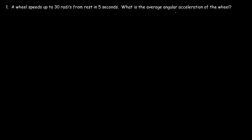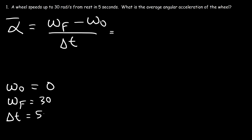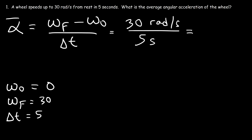What equation do we need to calculate the average angular acceleration? The average angular acceleration is equal to the change in angular velocity divided by the change in time. The initial angular speed is 0 because it speeds up from rest, the final angular speed is 30 radians per second, and the change in time is 5 seconds. So the change in angular speed is 30 divided by 5, giving us 6 radians per second squared.